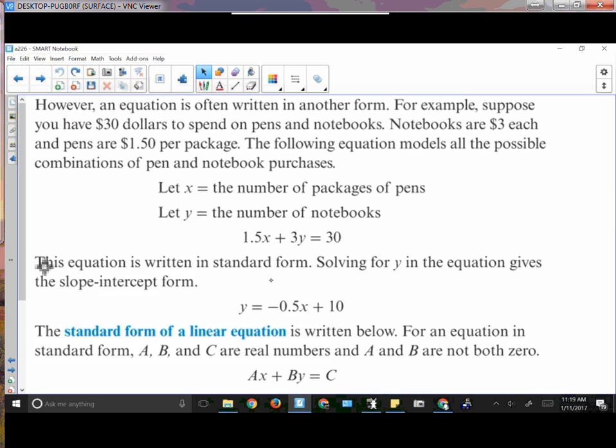The following equation could model all the possible combinations: 1.5x + 3y = 30. If I were to write this in slope-intercept form, I would get y = -0.5x + 10. That would allow me to put it into a graphic calculator. But if we want this in standard form, it kind of helps out some of us.